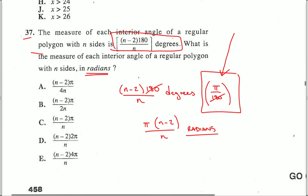My best choice, or my only choice I should say, is pi times (n minus 2) over n. Letter choice C.